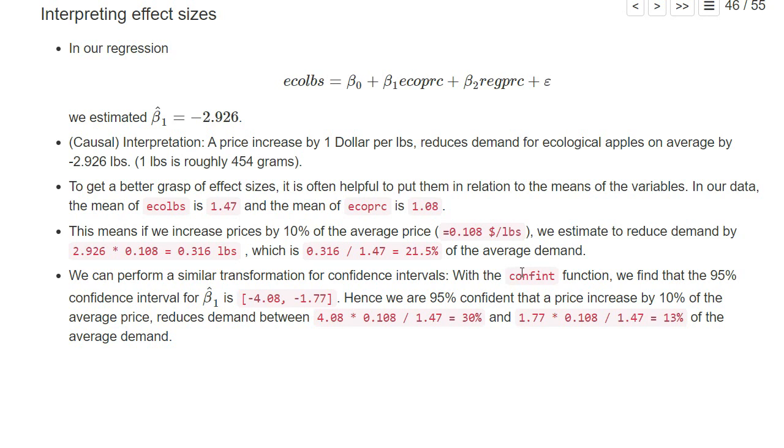If we run the R function confint on our regression result, we'll find a 95 percent confidence interval for β₁ that is this. We can transform it into percentages and then say we are 95 percent confident that a price increase by 10 percent of the average price reduces the demand between 30 percent and 13 percent of the average demand. It's actually the same results, but these numbers will probably for most people be easier to interpret.